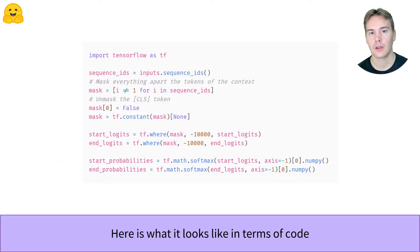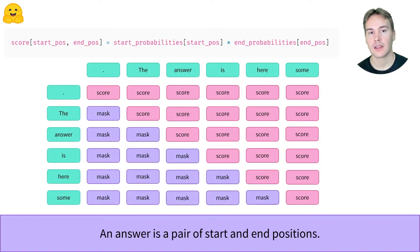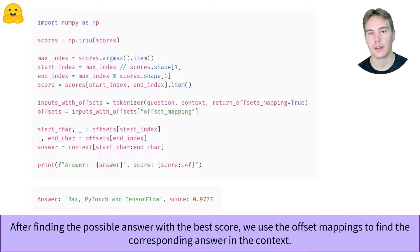Now the probability for each start and end position corresponding to a possible answer will give a score that is the product of the start probabilities and end probabilities at those positions. Of course, a start index greater than an end index corresponds to an impossible answer. Here is the code to find the best score for a possible answer.